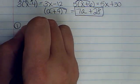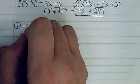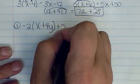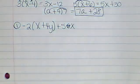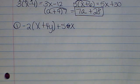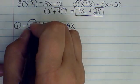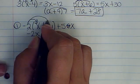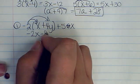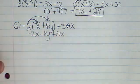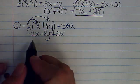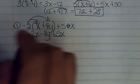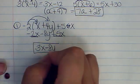Now for more complicated problems. Number one: negative 2 times the quantity x plus 4y, plus 5x. We distribute the negative 2 first: negative 2 times x is negative 2x, and negative 2 times 4y is negative 8y. Then attach plus 5x. Combining like terms: negative 2x plus 5x is 3x, and we attach minus 8y. The answer is 3x minus 8y.